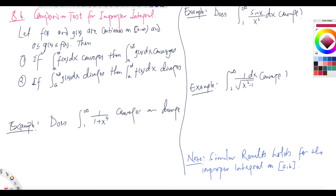So the comparison test says: if f(x) and g(x) are continuous on the interval [a, ∞) and both are positive, with g(x) ≤ f(x), then if the bigger function's integral converges — that is, if the integral of f(x) dx converges — then the integral of g(x) dx also converges. Because if the area under the upper curve is finite, the area under the lower curve must be finite as well.